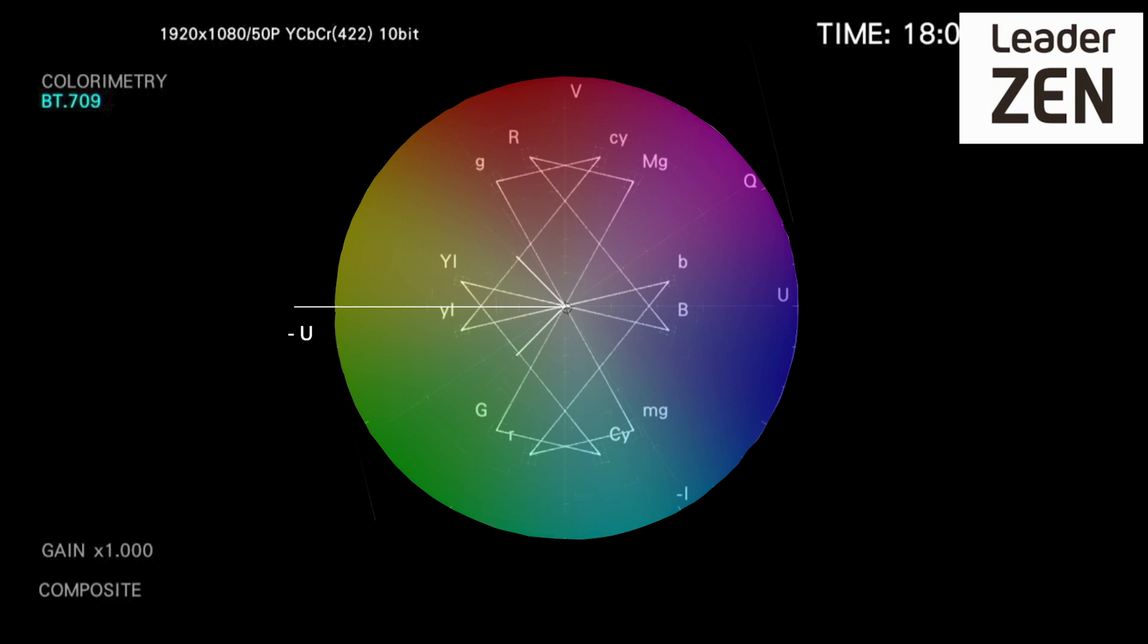Another element in the graticule is a fine grid at the 9 o'clock position, or minus U position, used for measuring the differential gain and phase.